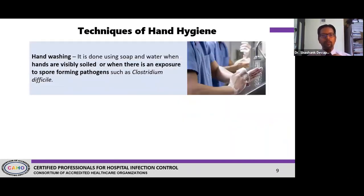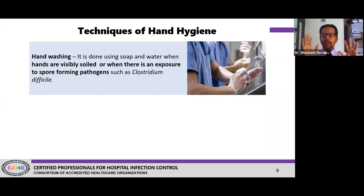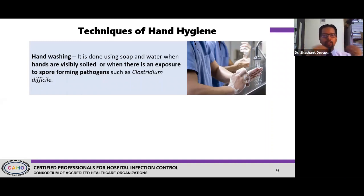Hand washing forms the core basis of any infection prevention program. You should wash your hands whenever they are visibly soiled — you've picked up something from the floor, gone to the washroom, cooked food, touched a patient, touched a urine bag or syringe, or your hands are visibly wet from blood or body fluid. Also when you have been exposed to a spore-forming pathogen, you need to wash your hands with soap and water.